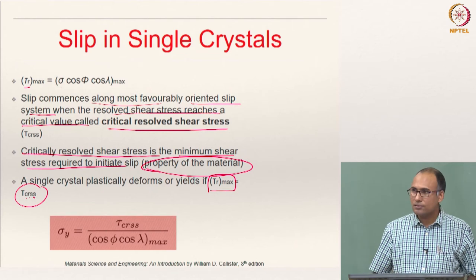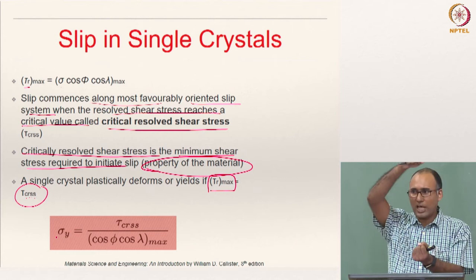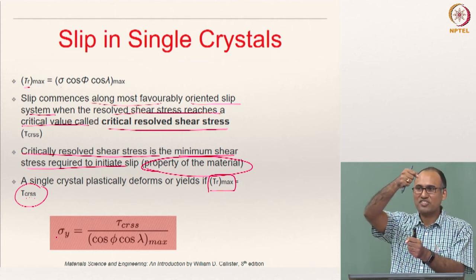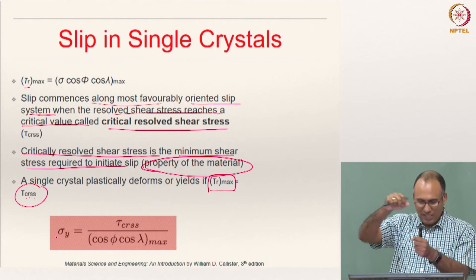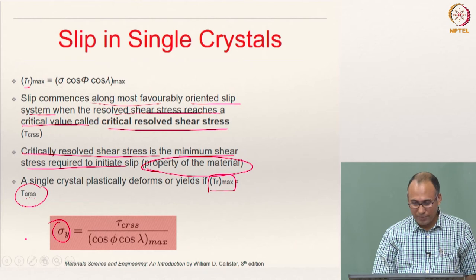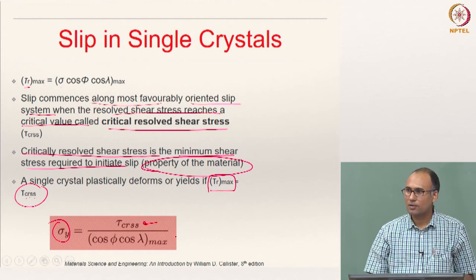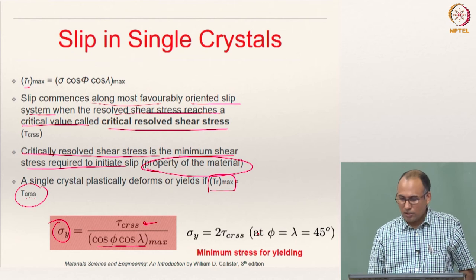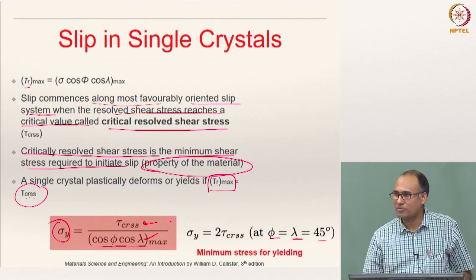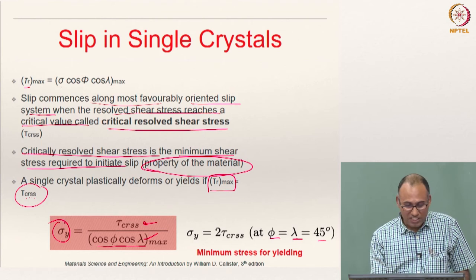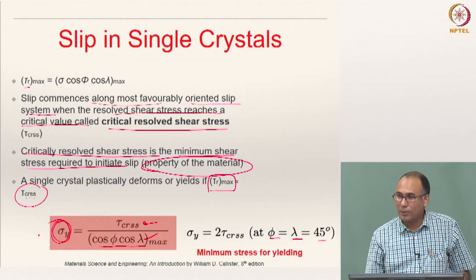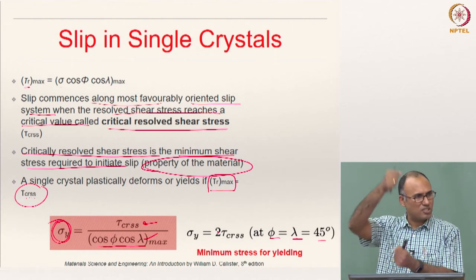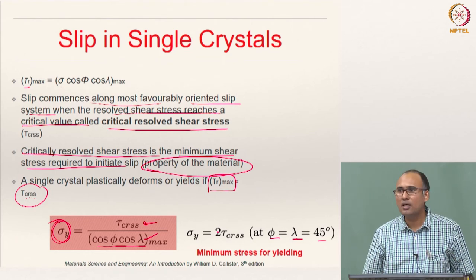You can now write the yield strength of the material. If you perform a uniaxial tension experiment on a single crystal, the yield strength will be tau_CRSS divided by (cos phi × cos lambda)_max. The maximum value of cos phi × cos lambda occurs when phi = lambda = 45 degrees, giving a maximum of 0.5. This means the yield strength of a single crystal material will be 2 times the critical resolved shear stress.